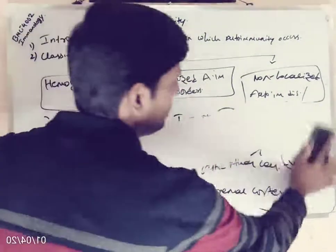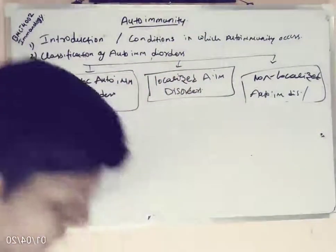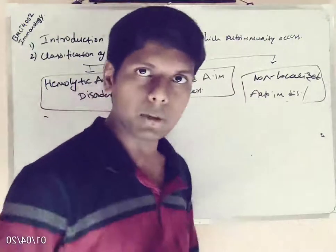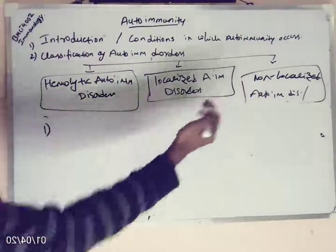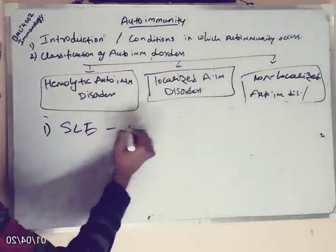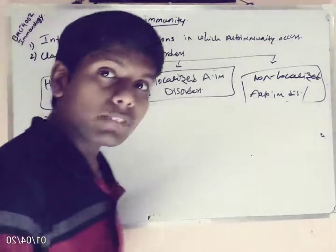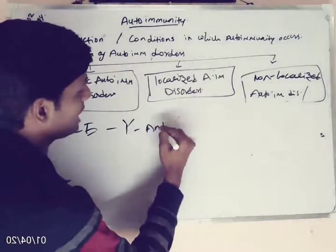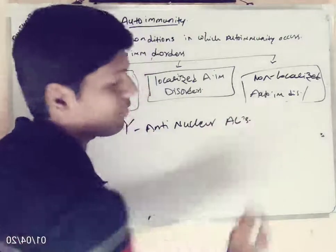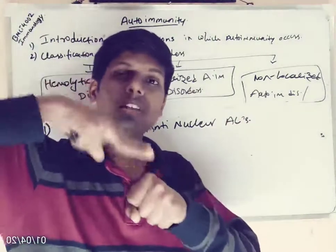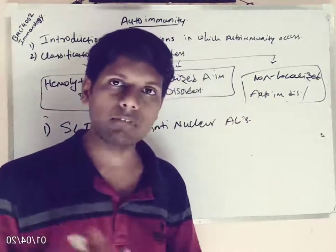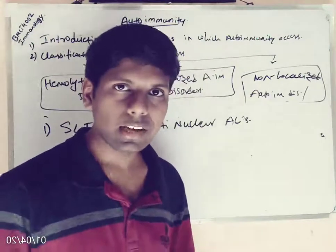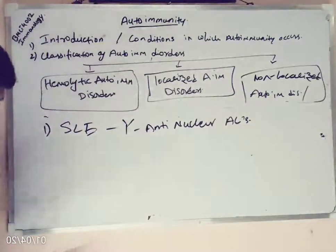Next are non-localized autoimmune disorders, also called systemic autoimmune disorders, where the immune system attacks all body parts. One example is systemic lupus erythematosus (SLE). In SLE, anti-nuclear antibodies are developed, destroying the nucleus of cells and resulting in the formation of a particular cell called the tart cell. The lab test used to detect these tart cells is called the LE cell test — the lupus erythematosus test.